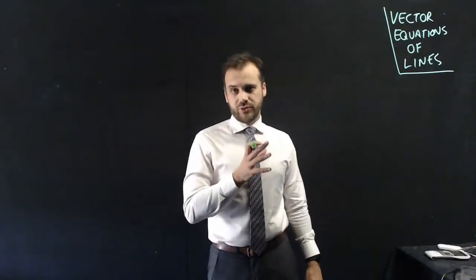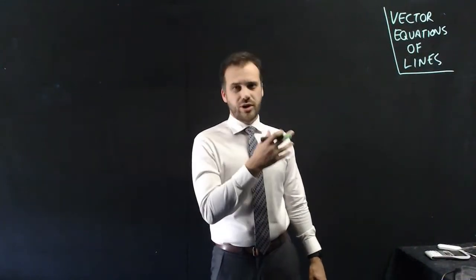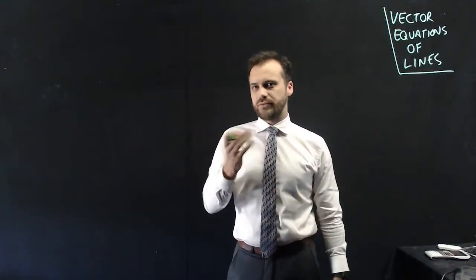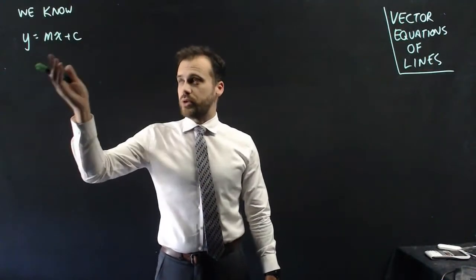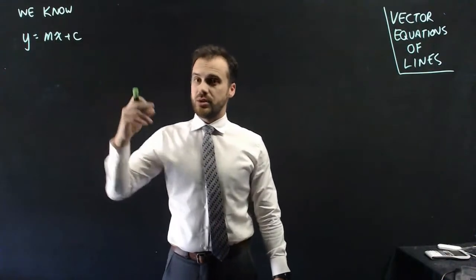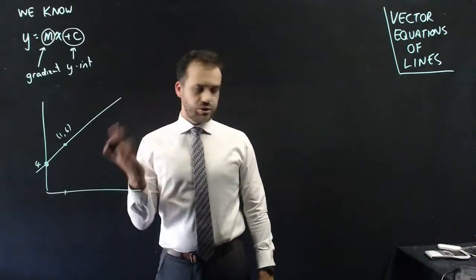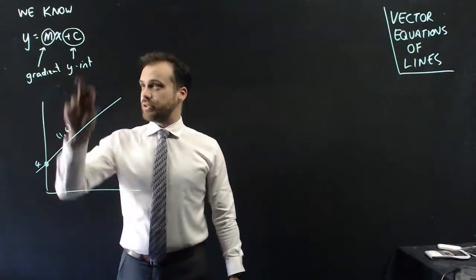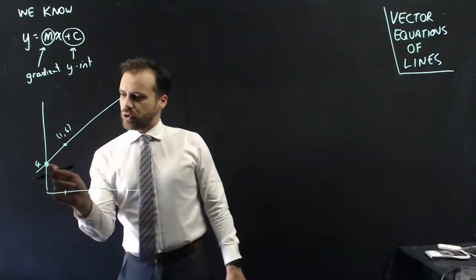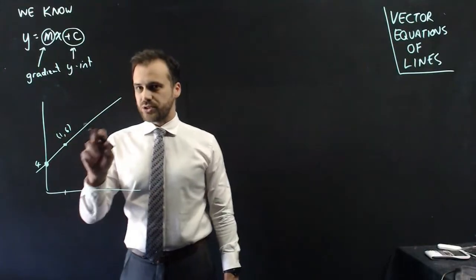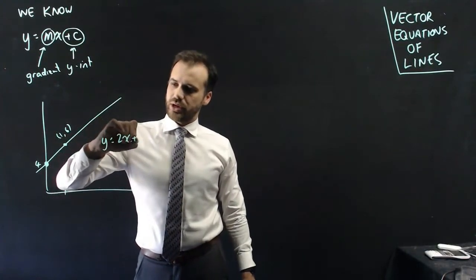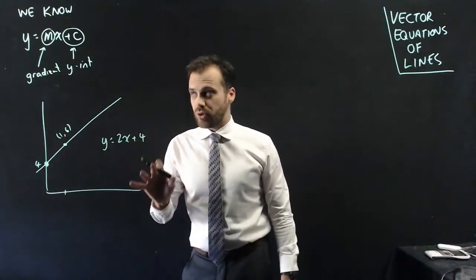We're looking at the vector equation of lines. You already know about the Cartesian form of the equation of a line: y equals mx plus c. The c is the y-intercept and m is the gradient. In this example, the y-intercept is 4, and we've gone 1 across and 2 up, so the gradient is 2. We can say the equation of this line is y equals 2x plus 4.